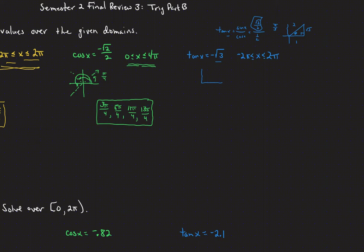Alternatively, you could draw the angle in quadrant 1 and use opposite over adjacent for tangent, then apply the Pythagorean theorem to get the hypotenuse. The sine would be square root of 3 over 2 and cosine would be 1/2, confirming a reference angle of pi over 3. Tangent, being sine over cosine, is negative in quadrants where x and y values differ in sign — so quadrants 2 and 4.